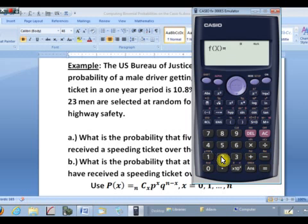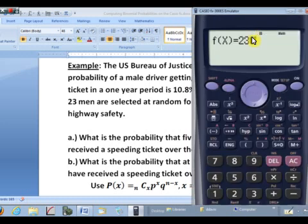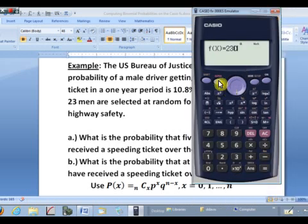So we'll go ahead and put in 23, shift key, combination. And now we need the variable X. Let me show you where that is. If you hit the alpha key, see it's red, and then notice here there's a red X just above the right parentheses key. So that's what I'll use to get the independent variable X. So I'll go ahead and hit alpha and then X. And then we want to multiply by 0.108. And then go ahead and raise that to the X power. So again, alpha and X. And then we want to multiply by the probability of failure, 0.892. And then we're going to raise that to the 23 minus X power.